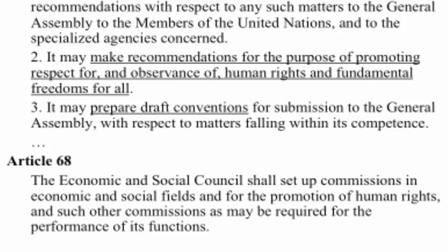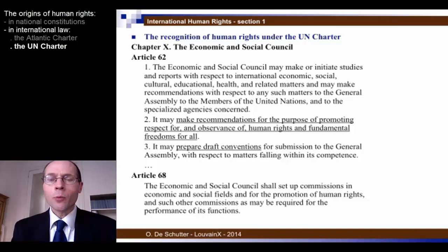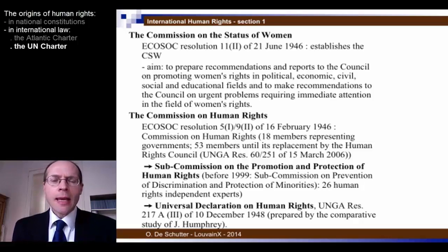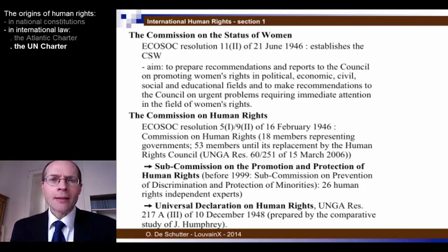The Economic and Social Council — the ECOSOC — was to work by establishing thematic commissions, including on human rights, explicitly mentioned in Article 68 of the UN Charter. ECOSOC established a Commission on the Status of Women in June 1946, a body preparing recommendations on improving the situation of women. It is in this Commission that the International Convention on the Elimination of All Forms of Discrimination Against Women would later be adopted in 1979.